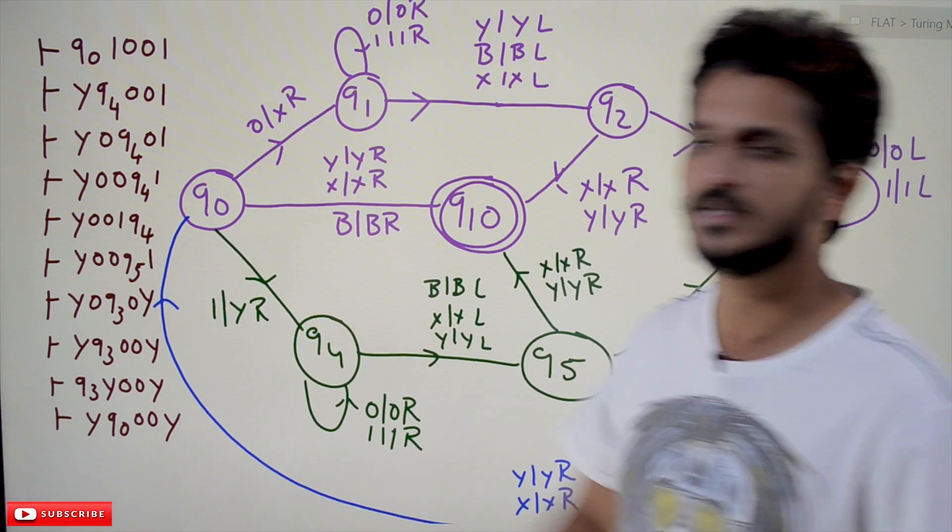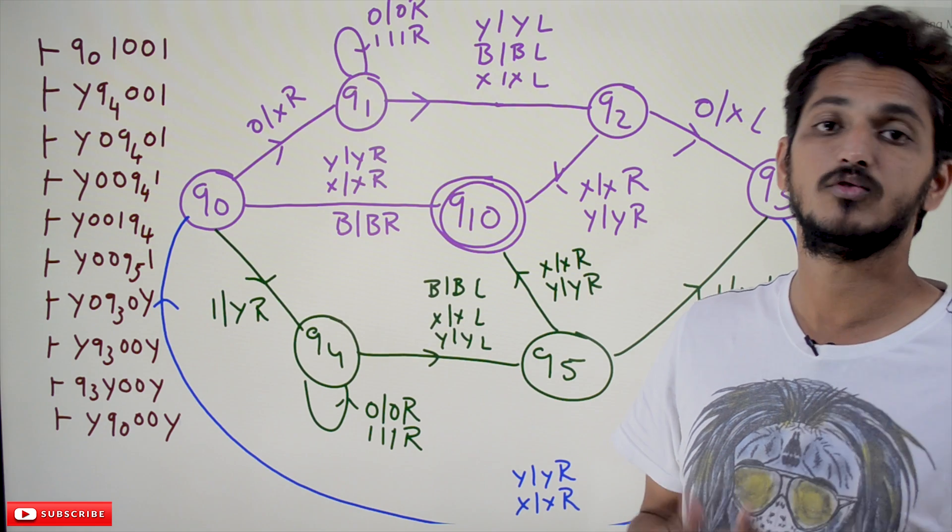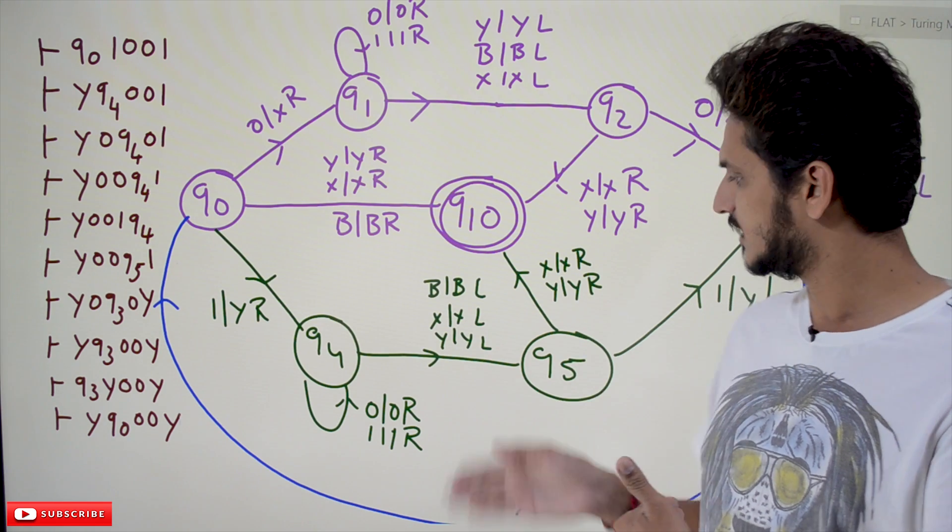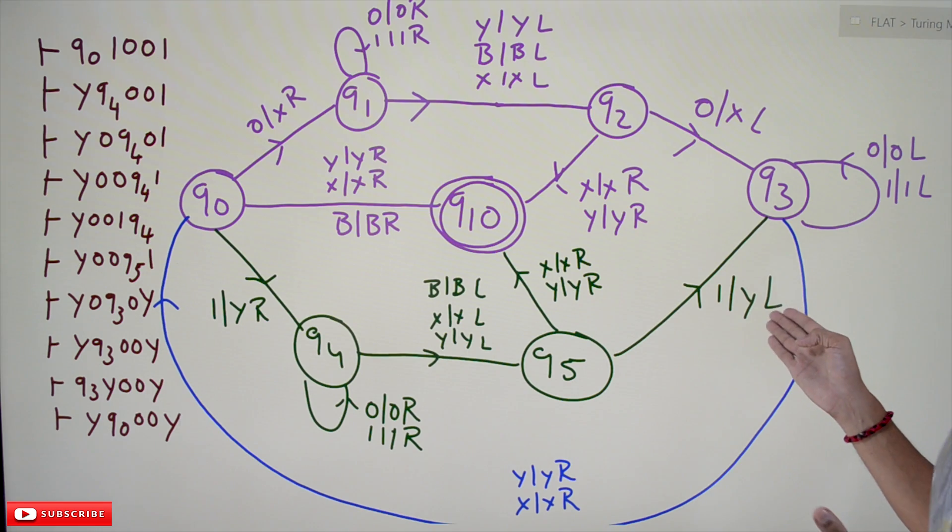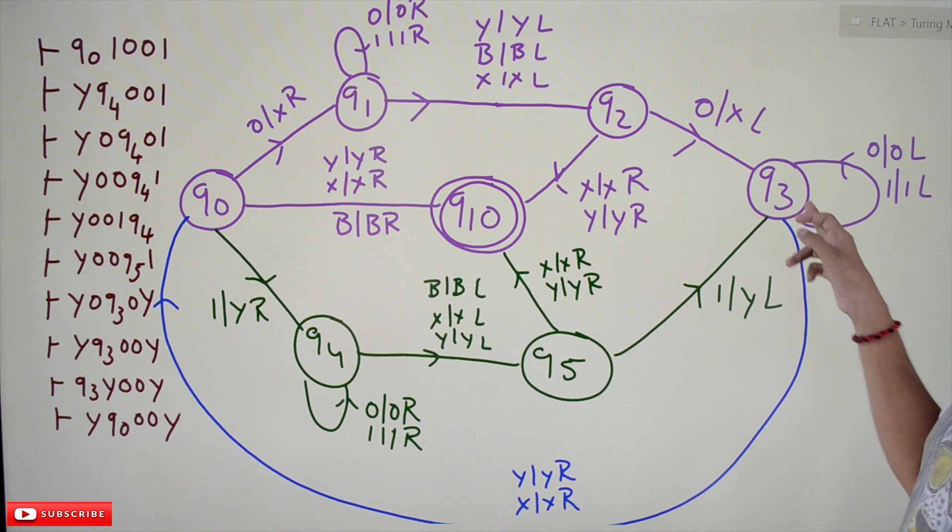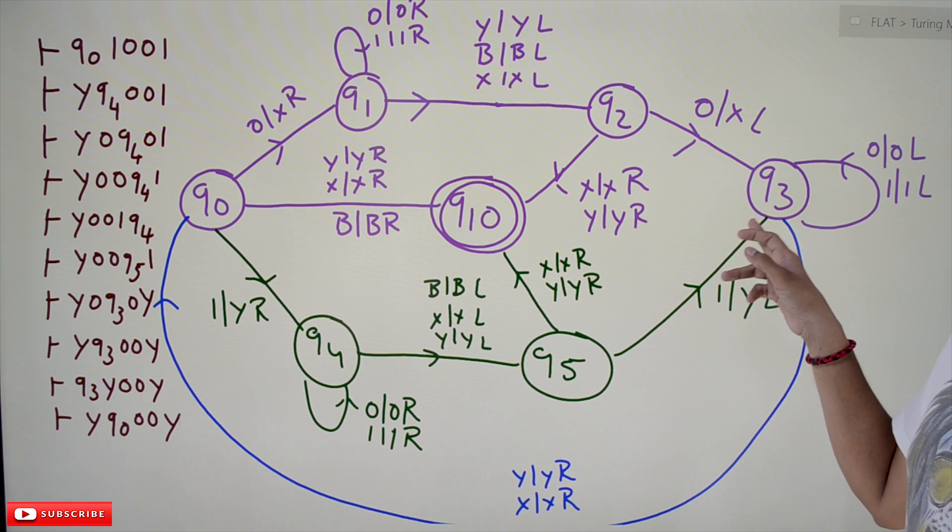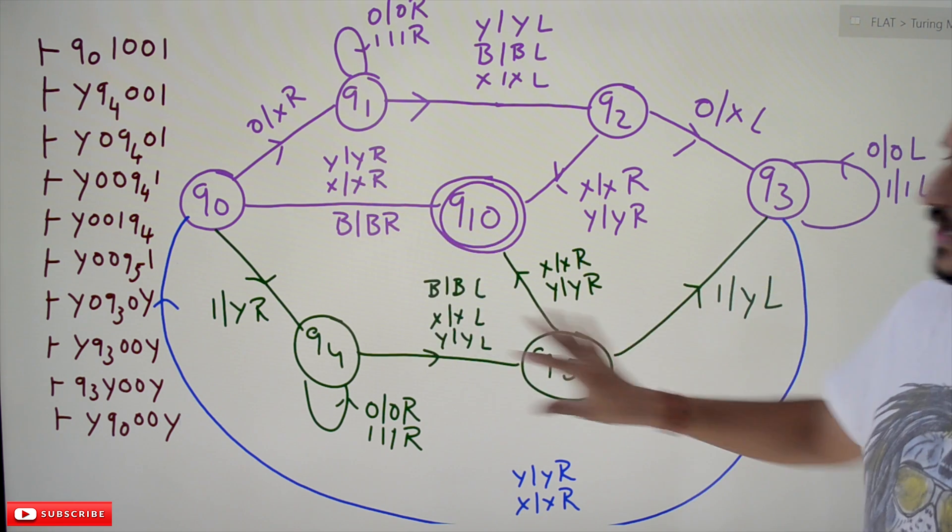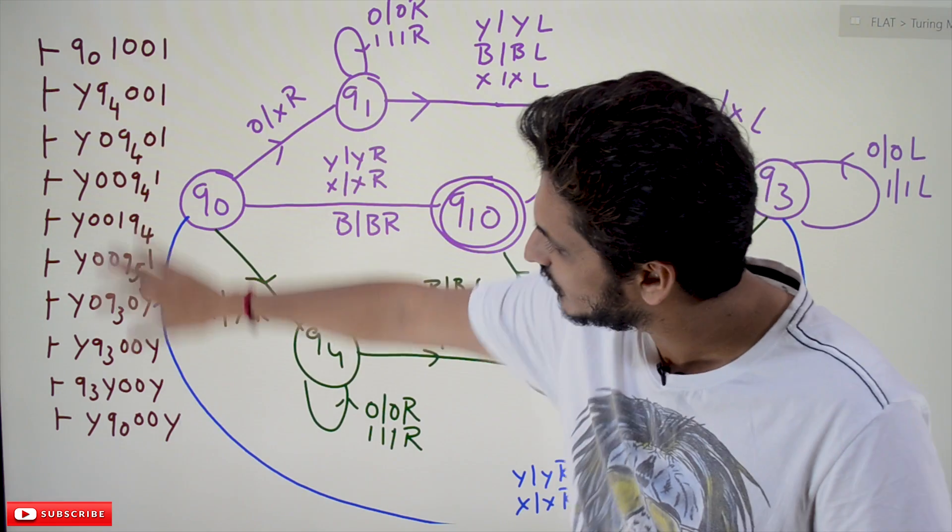That's why next we got Q5. Q5 is applied on 1. If it is applied on 1, we will convert it into Y and move to the left side. Again, we're converting it and moving to Q3 state. So whatever actions we do here, that is how it will be shown.